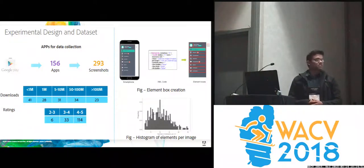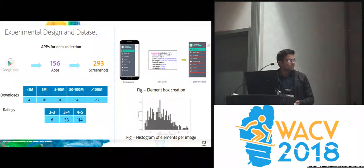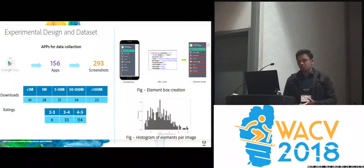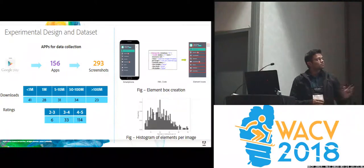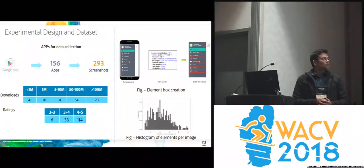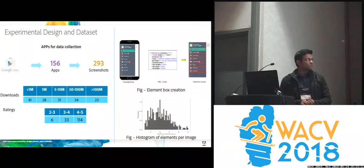There was no existing dataset for this kind of work — no dataset and no ground truth. So we created this dataset by downloading 156 Android apps from the Google Play Store and taking 293 screenshots of those apps, ensuring good distribution over downloads and ratings.